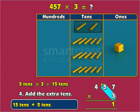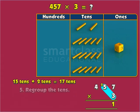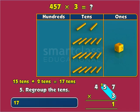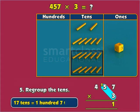15 tens plus 2 tens is 17 tens, which is again a two-digit number, meaning time to regroup again. So, regrouping 17 tens gives us 1 hundred 7 tens. Leaving the 7 tens in the tens column, we move 1 hundred to the hundreds column.